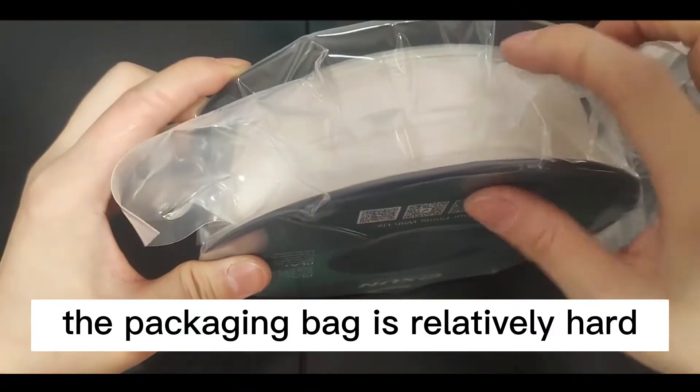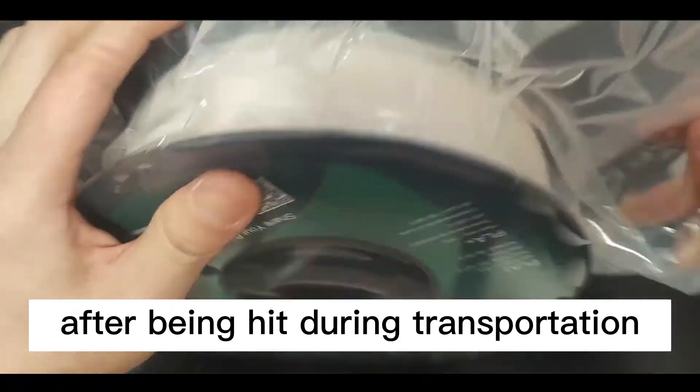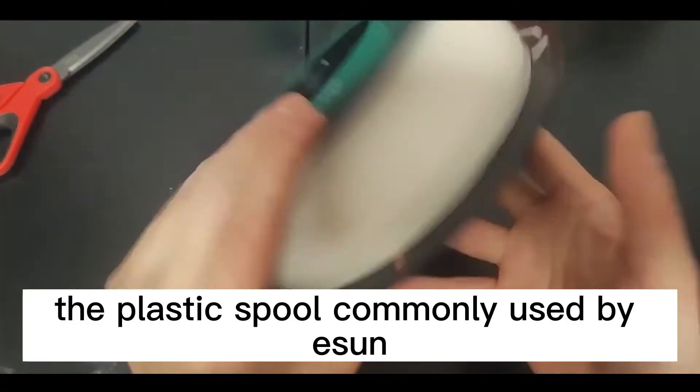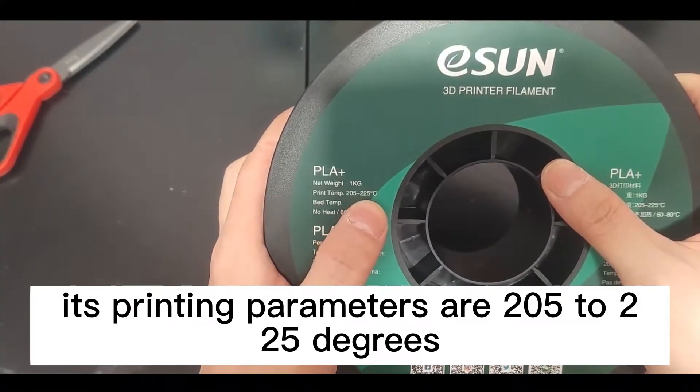The packaging bag is relatively hard, and it may have some small holes after being hit during transportation. The spool still uses the plastic spool commonly used by E-Sun. Its printing parameters are 205 to 225 degrees.